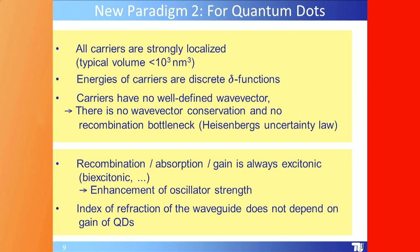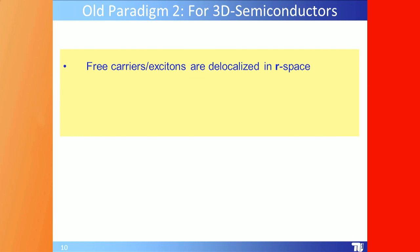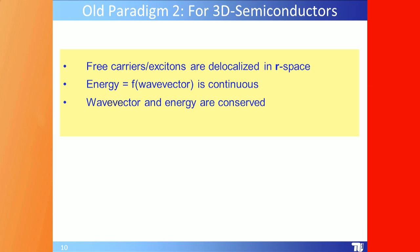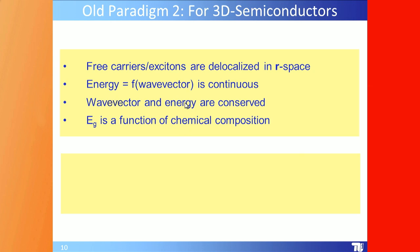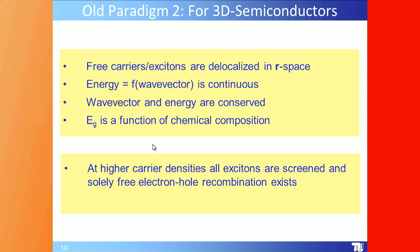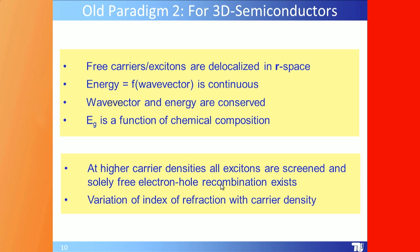For devices, the index of refraction of the waveguide does not depend on the gain of the quantum dots — effectively removing Kramers–Kronig. The old paradigms included continuous energy as a function of wave vector, wave vector and energy conservation, and energy gap as a function of chemical composition. At higher densities, excitons are screened and we have solely free electron-hole recombination — all in contrast to what we know now for quantum dot systems.